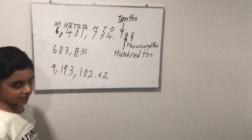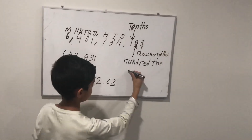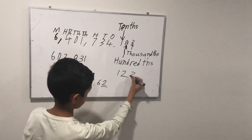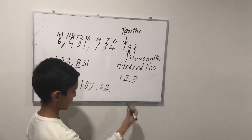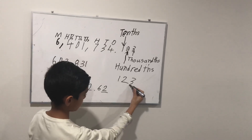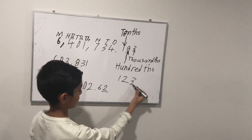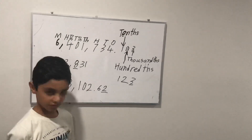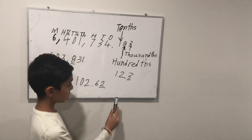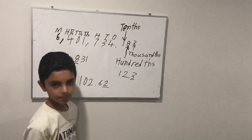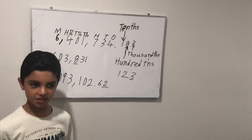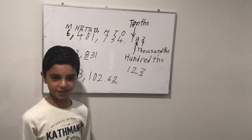Now last question: one hundred twenty-three. Now what is this place? Do you know? It's the ones. So the correct answer is the ones place. I hope you got it correct.